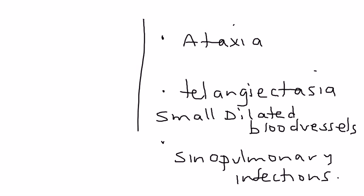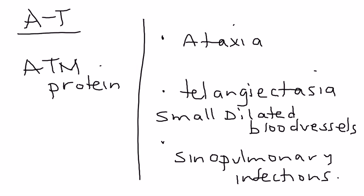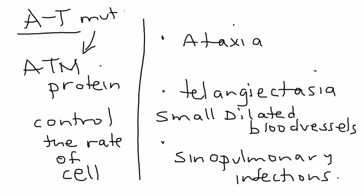What is the reason this is happening? AT occurs because there's a mutation in a protein called ATM protein. And this ATM protein is involved in detecting DNA damage and controlling the rate of cell growth and division. When this protein has a mutation, the rate of cell growth and division is not properly conducted, and that will allow cells to proliferate, and that can lead to cancer.